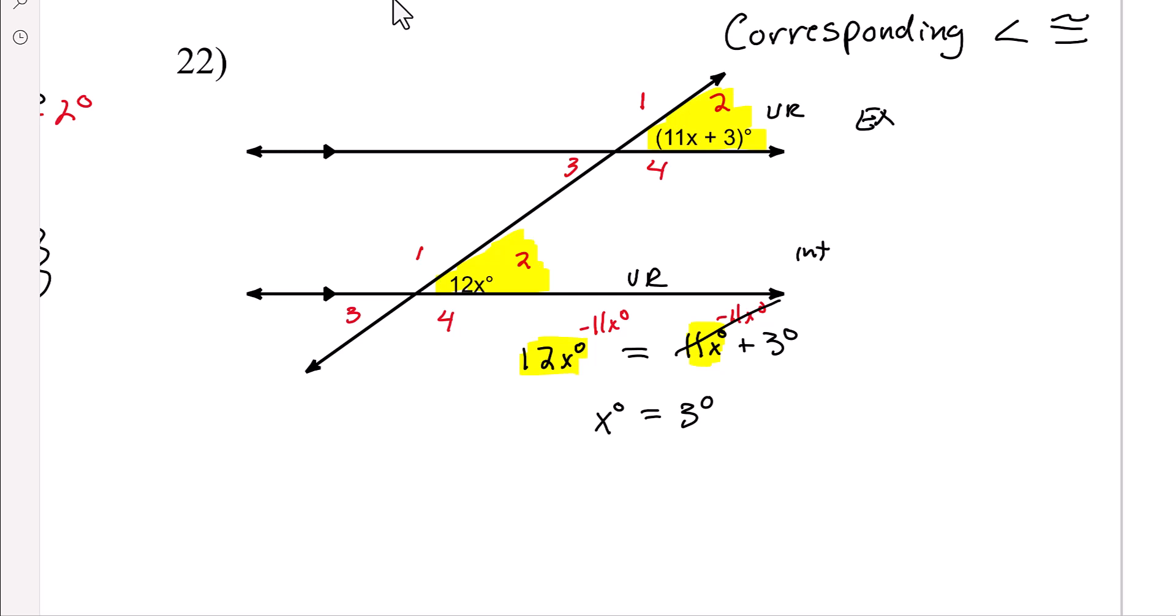So 12 times 3 degrees is 36 degrees. That's that one, and then let's do the other one. 11 times 3 degrees plus 3 degrees, well 33 plus 3, that's also 36 degrees. So this answer right here is correct.